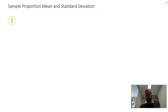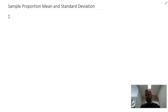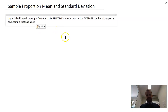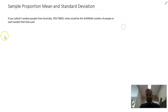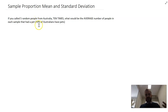In this video I'm talking about sample proportion mean and standard deviation. The kind of question I'm trying to answer is something like this: if you call five random people from Australia ten times, what would be the average number of people in each sample that had a pet? I'll give you a bit more information — 70% of Australians have pets.